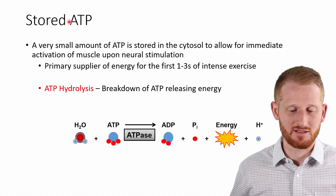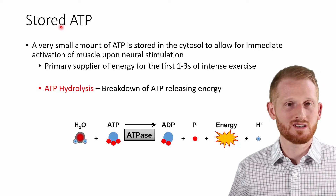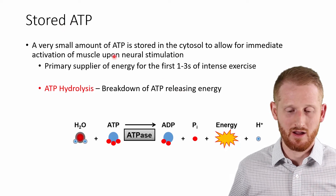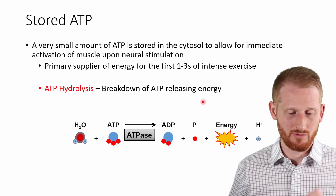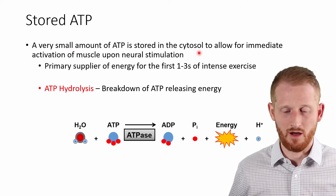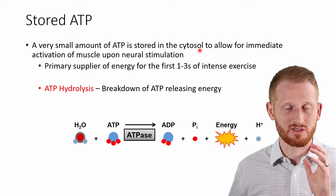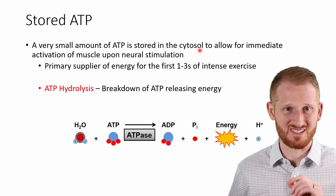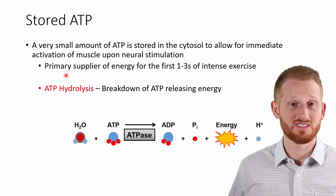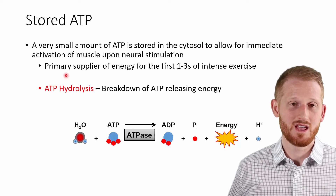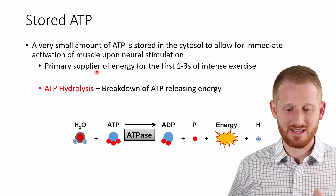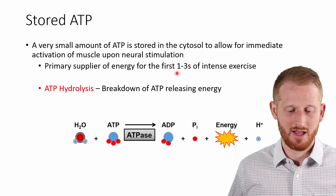Let's talk about the immediate bioenergetic energy sources. The first one is not so much a pathway but more of a description of something that exists: the stored ATP that's just sitting there waiting to be used in our muscles and various cells of the body. We always have a little bit of ATP sitting there ready to be used — a very small amount stored within the cytosol of the cells. When we start to contract muscle, this is going to be the first ATP we use. A typical person has about enough stored ATP to sustain intense exercise for somewhere between one and three seconds.